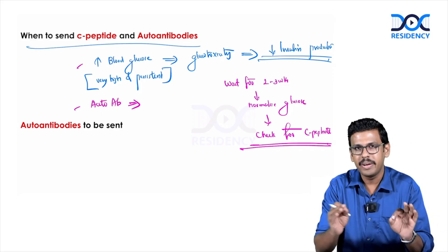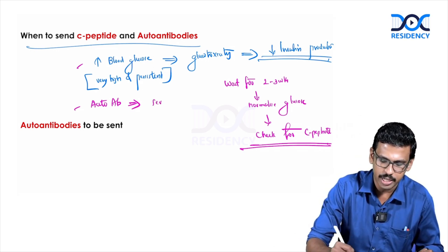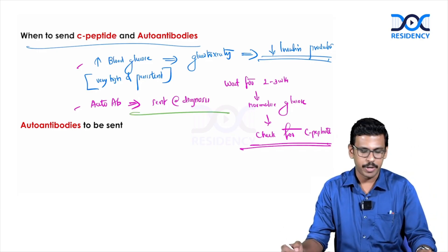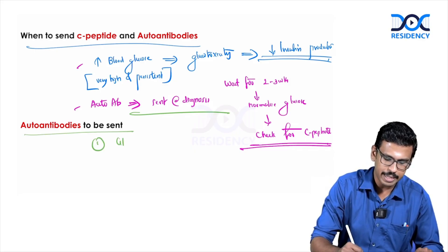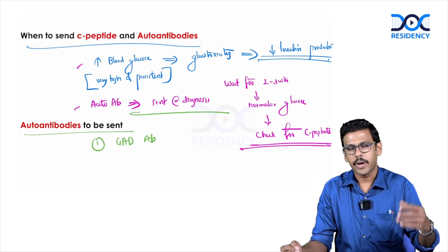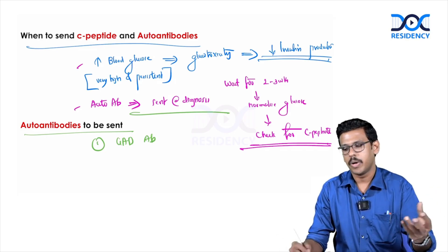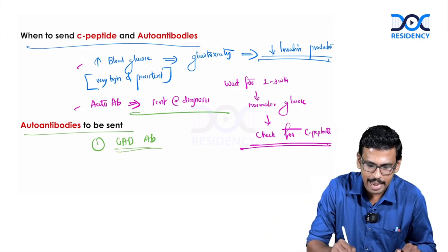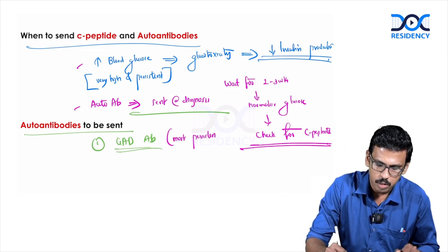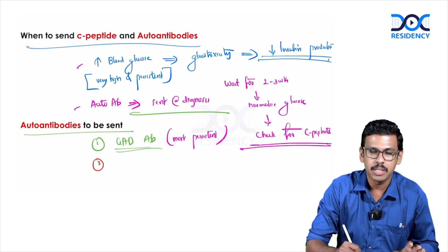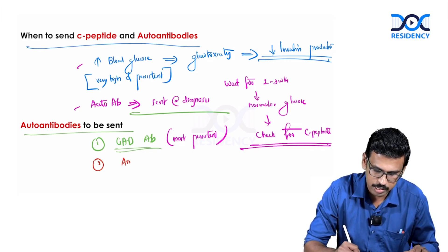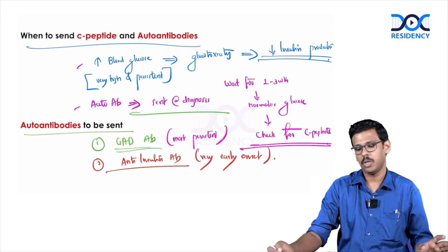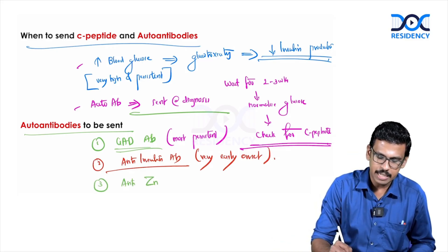Auto-antibodies have no direct correlation with glycemia and can be sent at diagnosis itself — you need not wait for optimal glycemic control. The first-line antibody is the anti-GAD antibody, which is the most persistent. If you suspect type 1 diabetes after 5–10 years of diagnosis, send the GAD antibody. In very early onset diabetes — less than 5 years of age — send the anti-insulin antibody. Other antibodies include anti-zinc transporter 8 (ZnT8), anti-IA-2A, and islet cell antibodies.